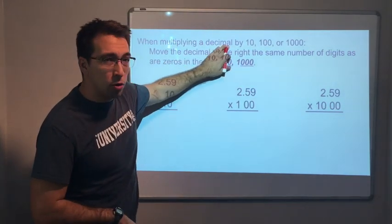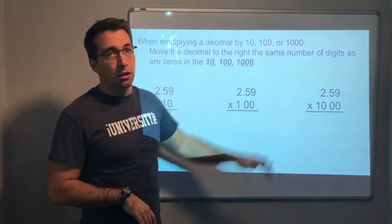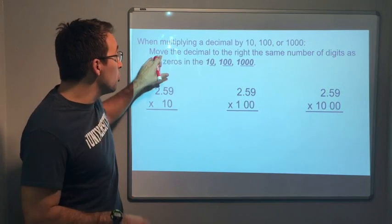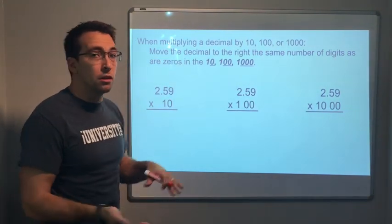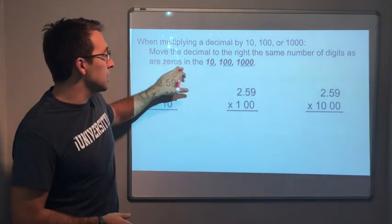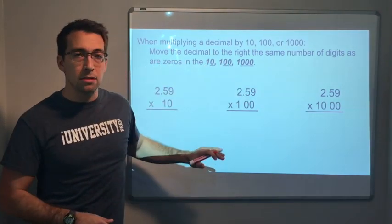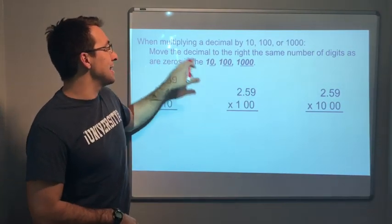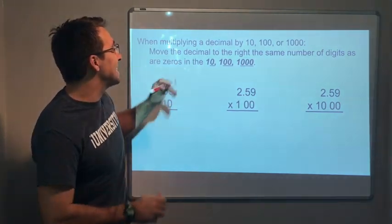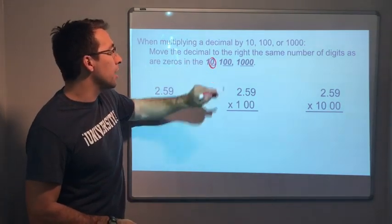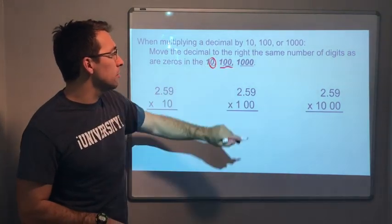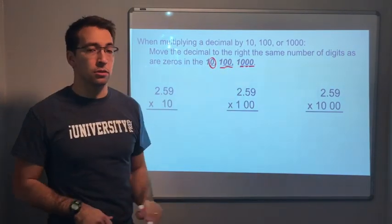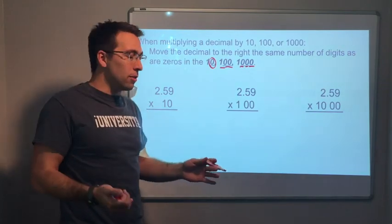When multiplying a decimal by ten, one hundred, or one thousand, all you have to do is move the decimal to the right the same number of digits as the zeros in the ten, one hundred, or one thousand. So if you're multiplying this decimal number by ten, you have one zero. If you multiply it by one hundred, you have two zeros, three zeros. And let's check this out.